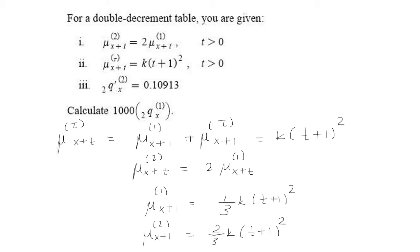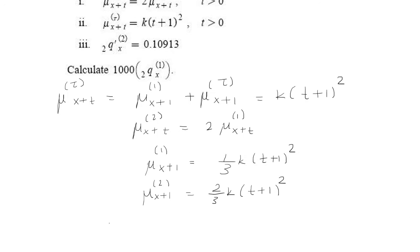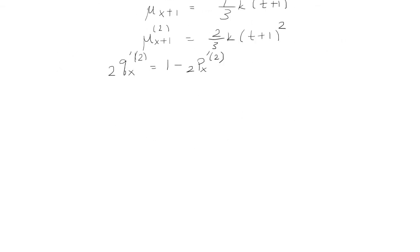So now we've used the first two bullet points. Looking at the third one, we have q-prime of x for decrement 2 over two years. We can rewrite this as a complement of surviving, and represent 2p-prime of x for decrement 2 as e to the negative integral from 0 to 2 of the force of mortality for the second decrement.